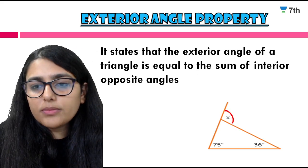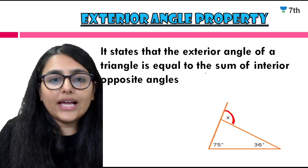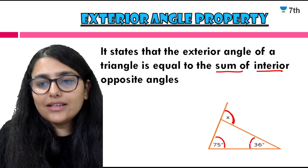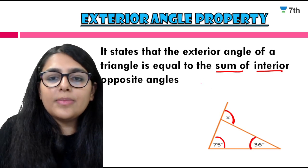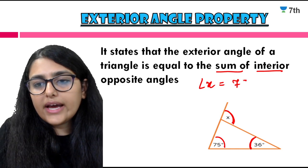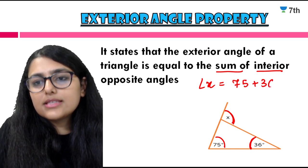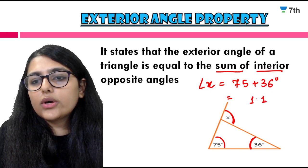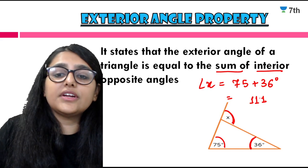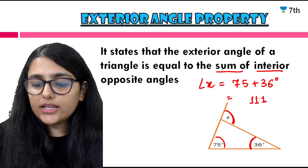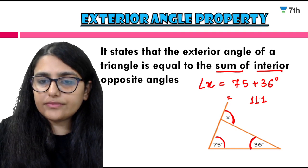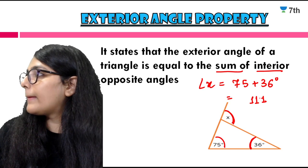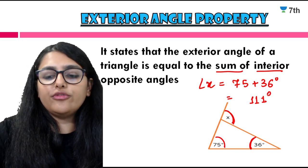For example, if the exterior angle is x and the two interior opposite angles are 75 degrees and 36 degrees, then angle x = 75 + 36 = 111 degrees. This is how you find the value of an unknown exterior angle using the exterior angle property.